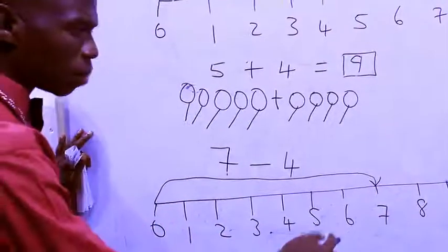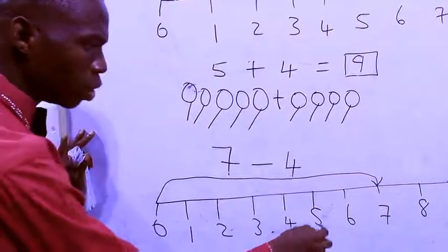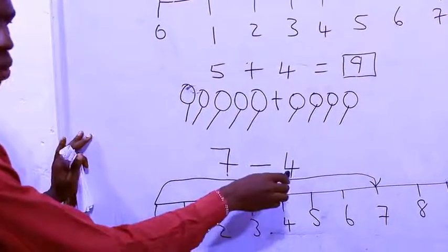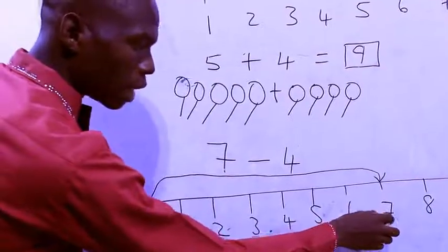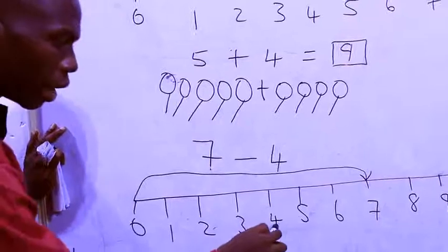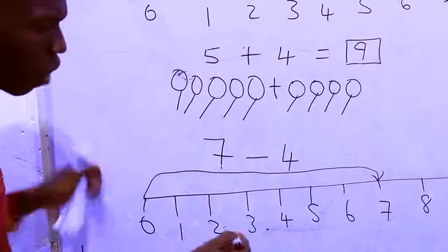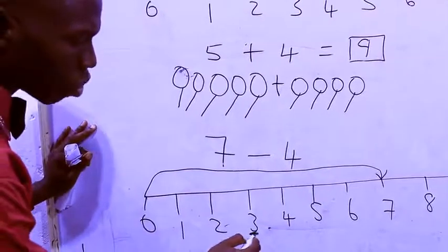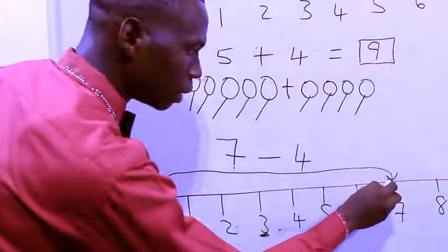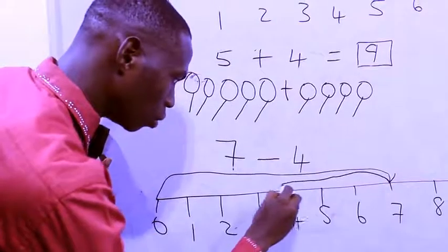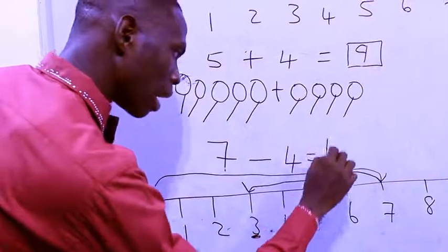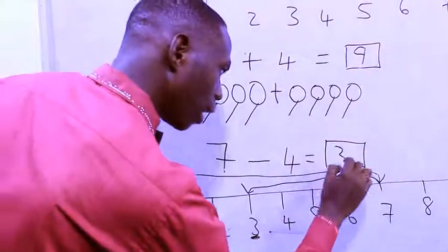From seven, let's count backward: one, two, three, four — because we are removing four. From seven, count backward: one, two, three, four. Where did our four stop? In the number three. We trace it back and go to that place. That means our answer is three.